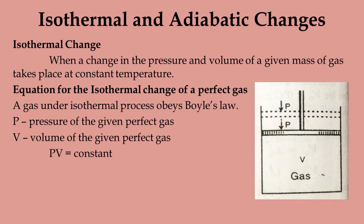Let me explain about isothermal change. When a change in the pressure and volume of a given mass of gas takes place at constant temperature, the change is called an isothermal change. Consider a gas contained in a cylinder, compressed by a piston as shown in the figure.